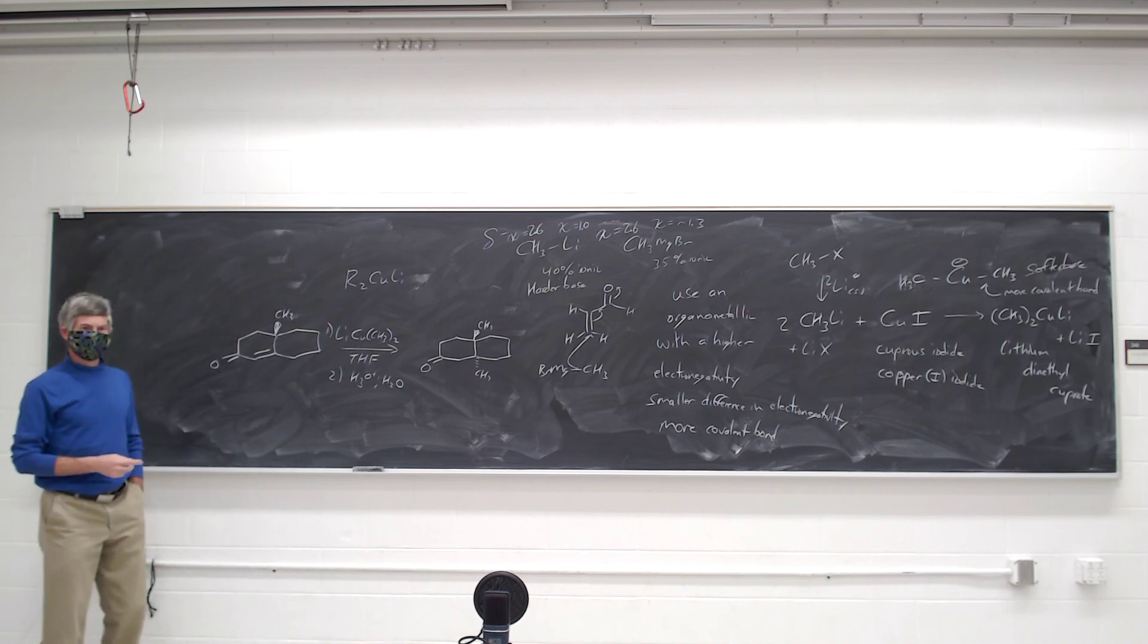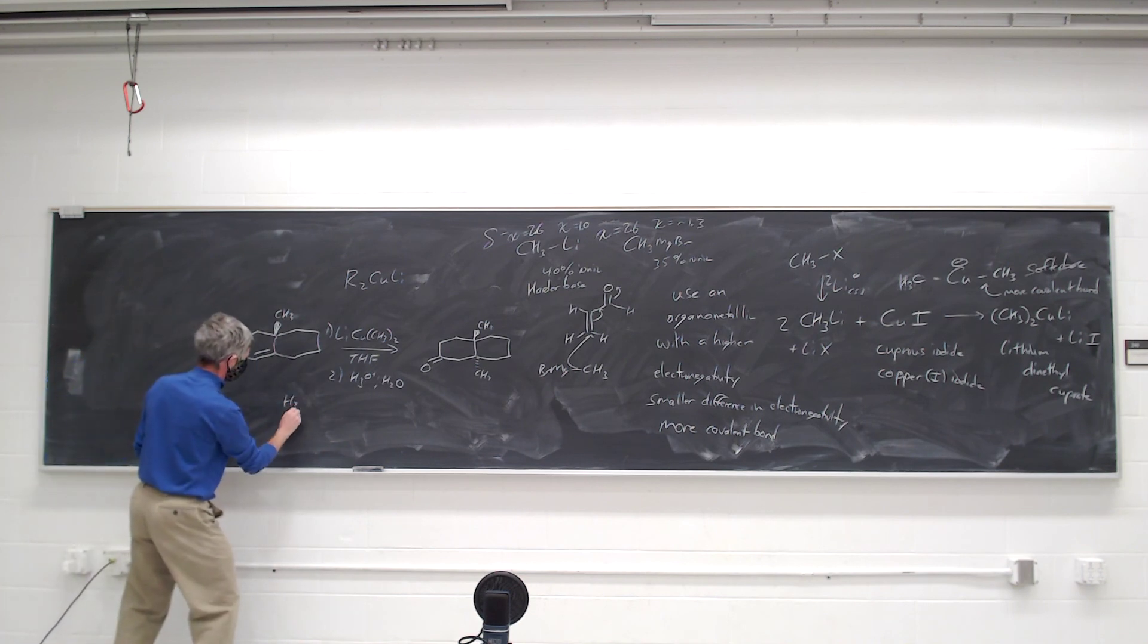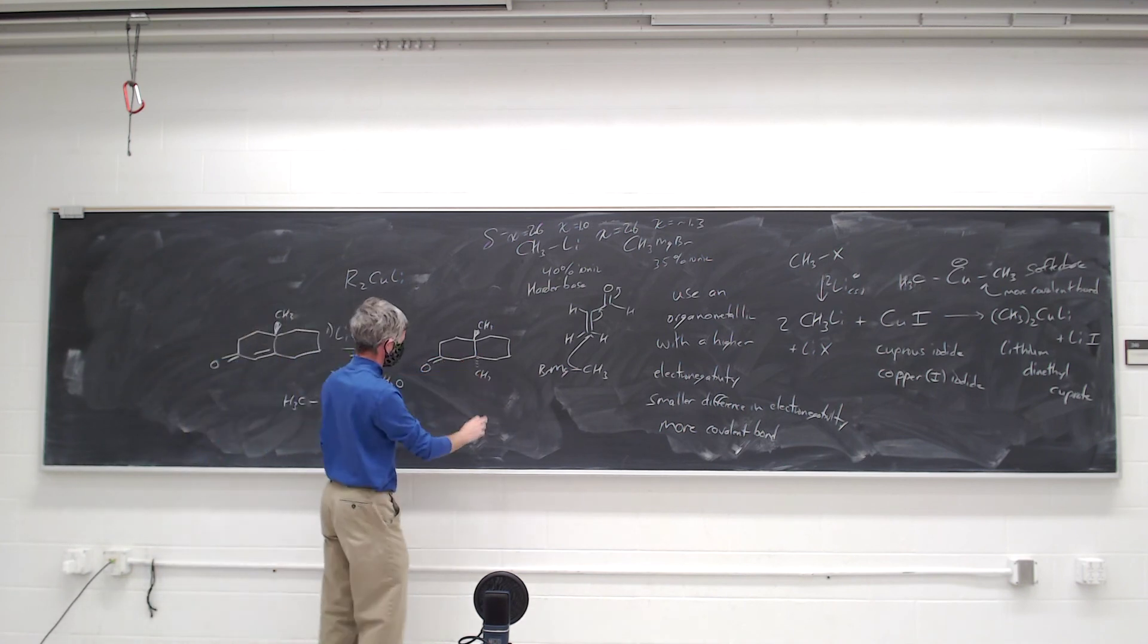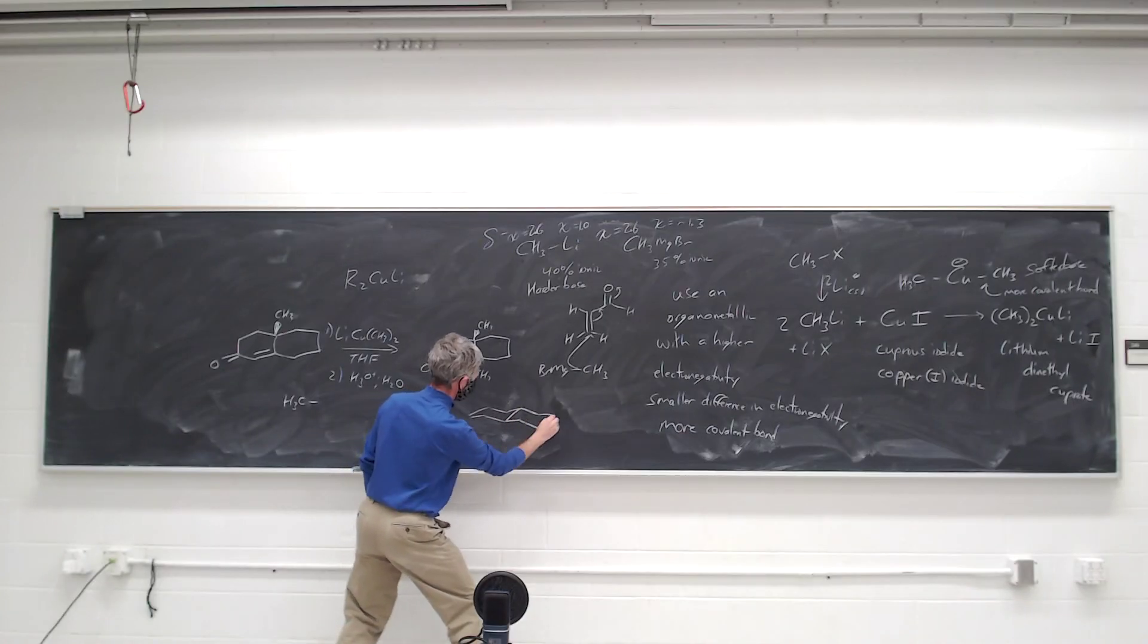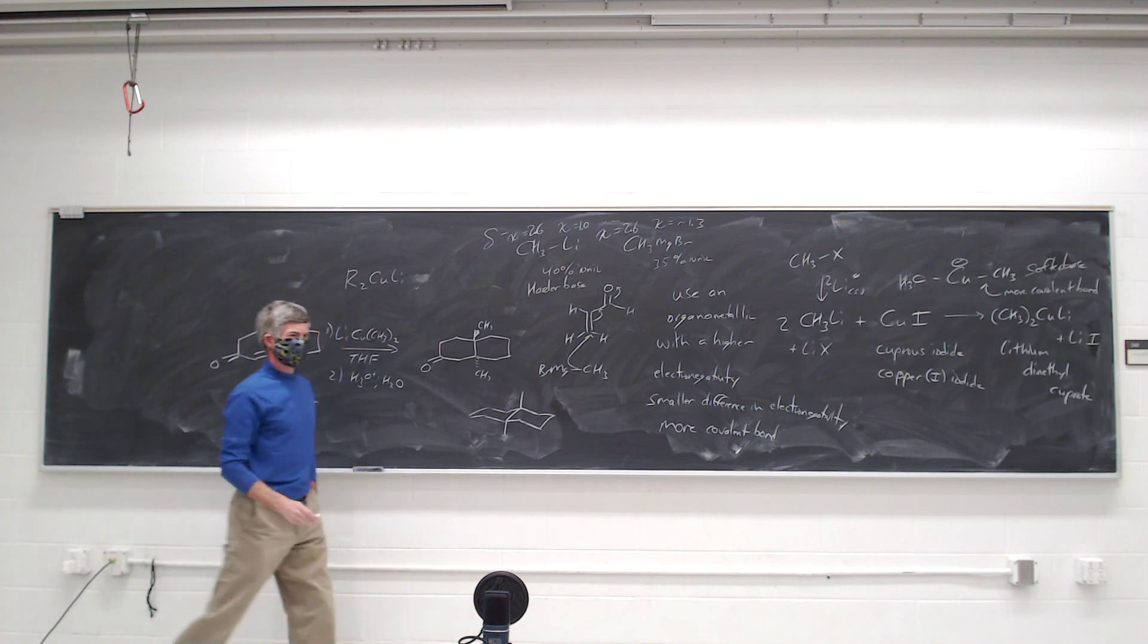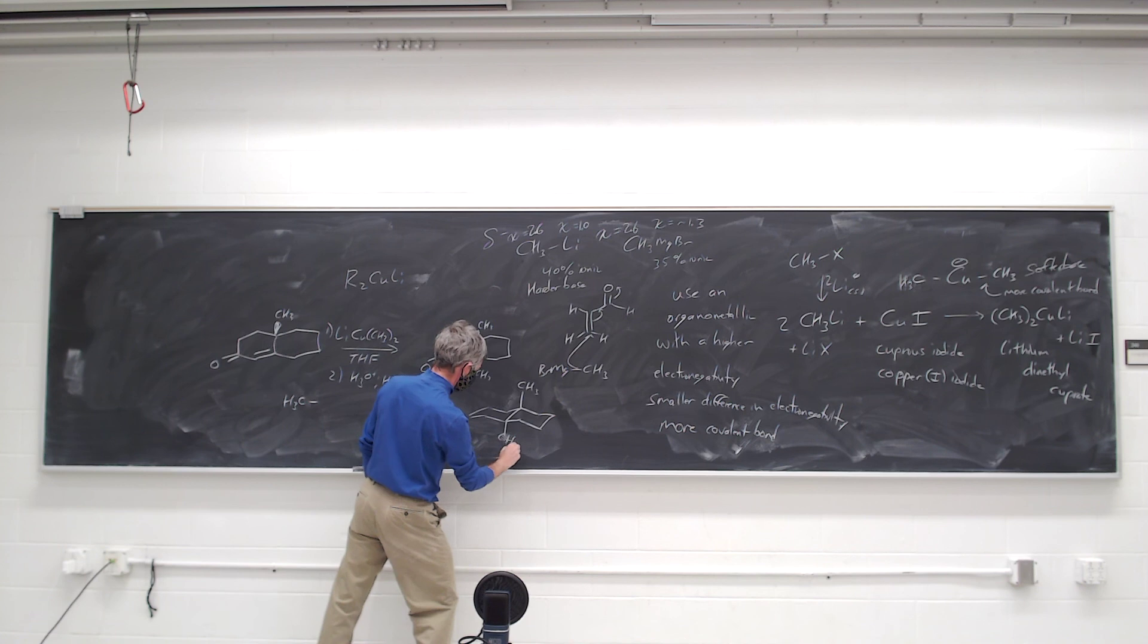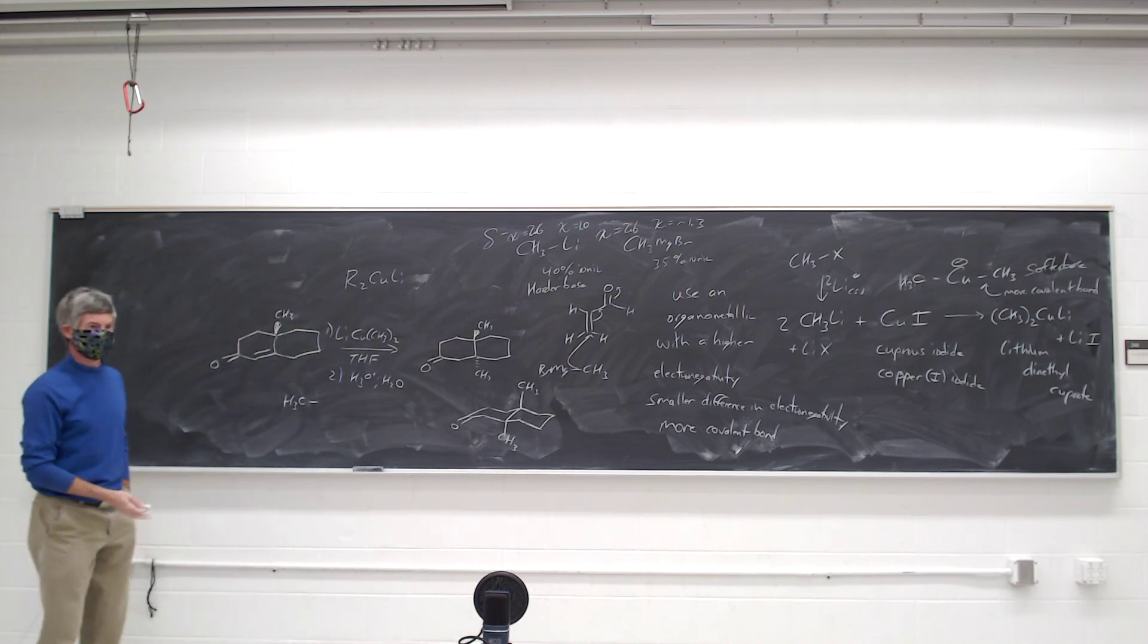And then with the product going back, is that the only possible one? Or is that just the major product? That's the more stable product, because it's the trans-ring fusion. So if you were to draw this in a six-member chair, it would look like that. Okay. Where you've got the rings fused. So you could get the cis-ring fusion as well. But I asked you to draw the most stable product.